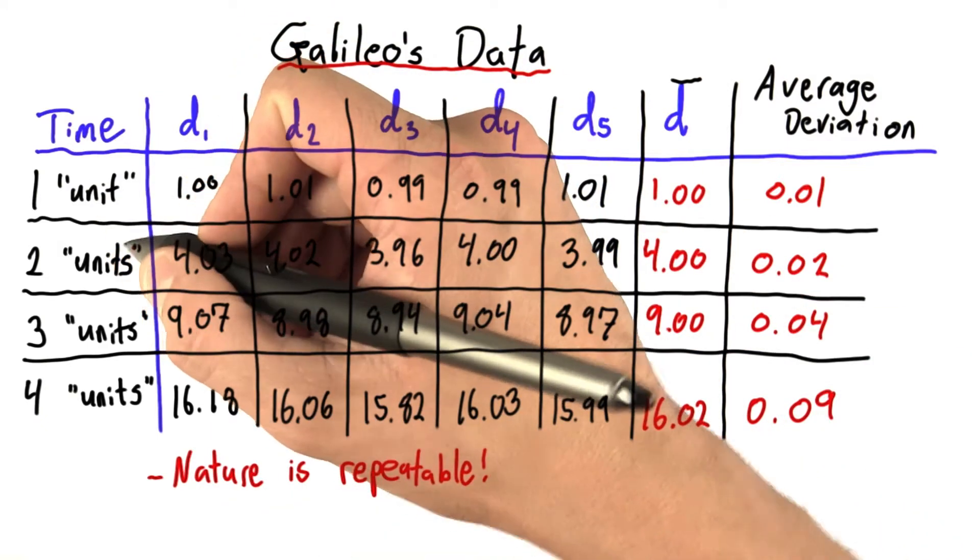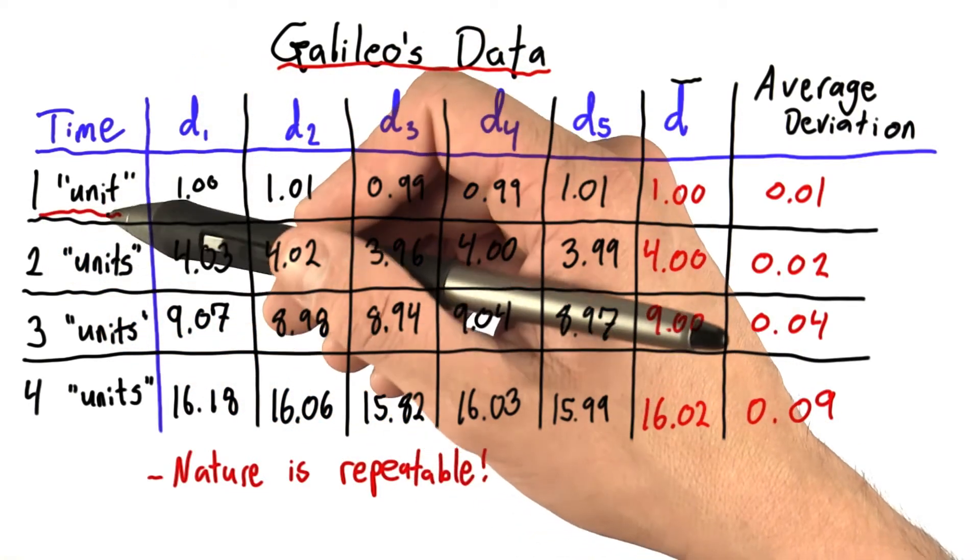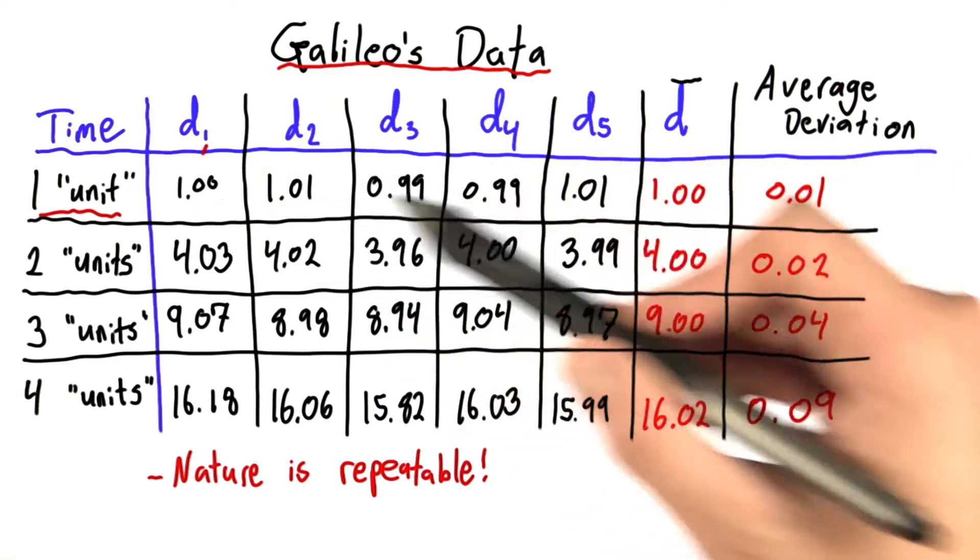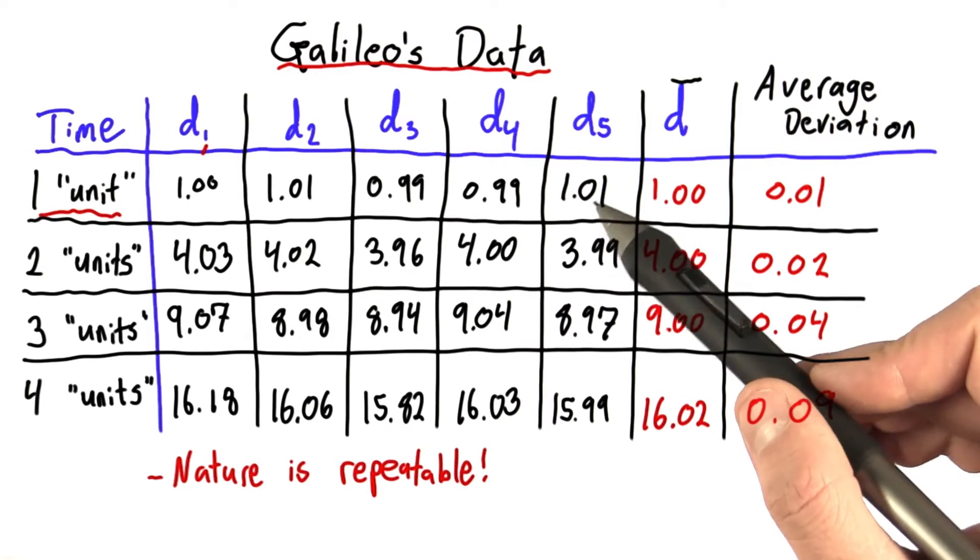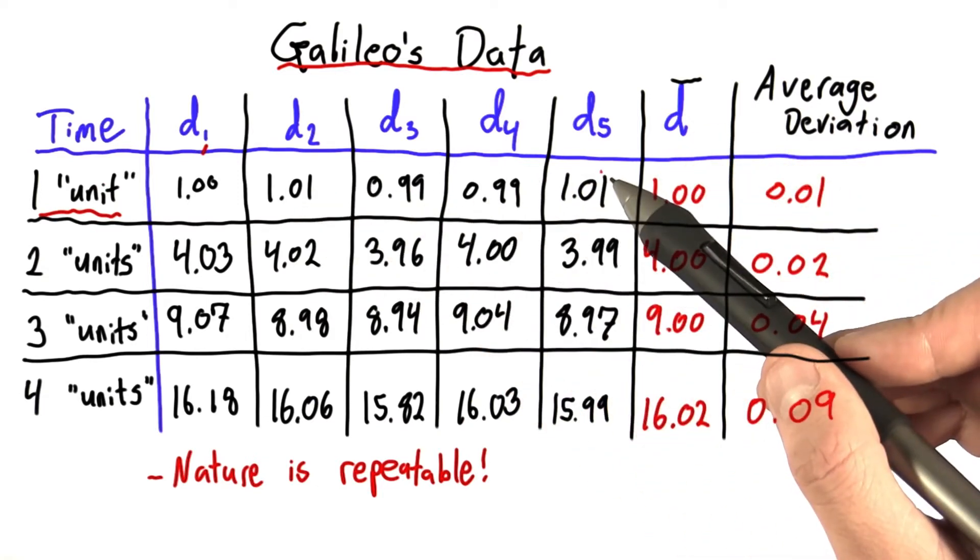And by that I mean, when we roll the ball for one unit of time, if we actually roll for one unit, the ball will go the exact same distance in all five of these trials. The reason why these numbers aren't all identical is because we either mistimed or mismeasured the distance. It's an error on our end, not on nature's end.